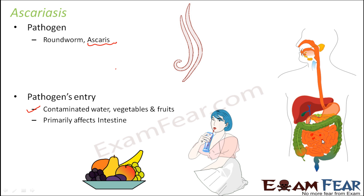These adult worms live in the intestine till they die, spending their whole lifetime inside the human body. If only one or two worms are present they sometimes do not cause any problem at all. But when there are too many worms and the infection is very heavy, it can cause pain, nausea, or bleeding.